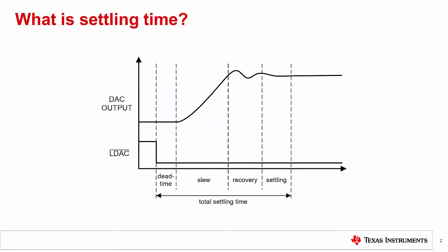Firstly, we will discuss what we mean when we say settling time. The settling time of a DAC is the total time a DAC requires to transition from an initial output voltage and to settle within a defined threshold of a desired final output voltage.